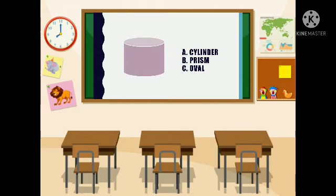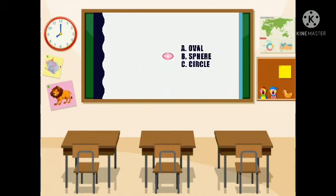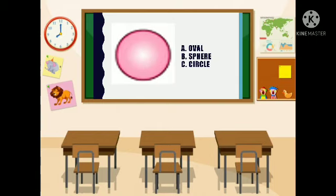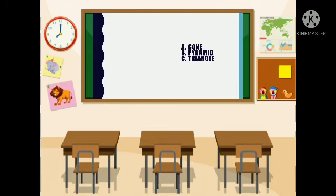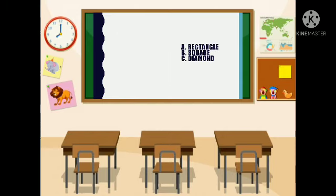How about this shape? Is it A cylinder, B prism, or C oval? Very good! Letter A is a cylinder. How about this shape? A oval, B sphere, or C circle? Correct! The correct answer is letter B, sphere. This shape is A cone, B pyramid, or C triangle? Correct answer is letter A, cone.